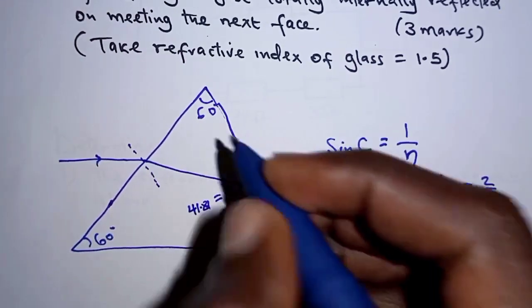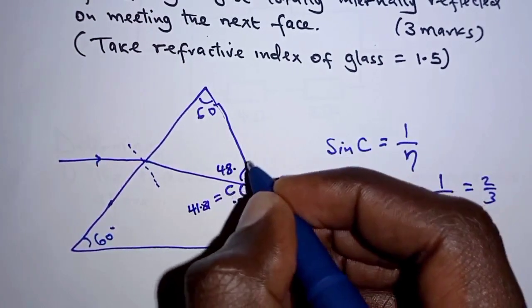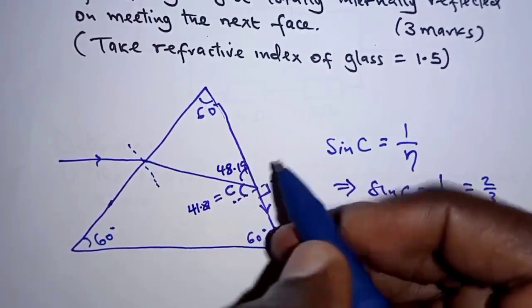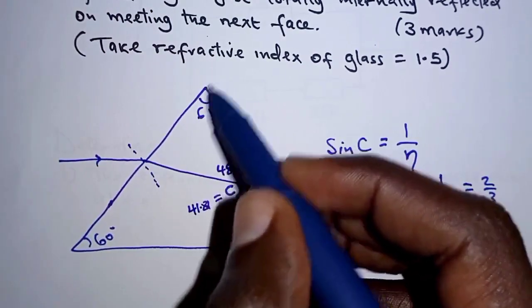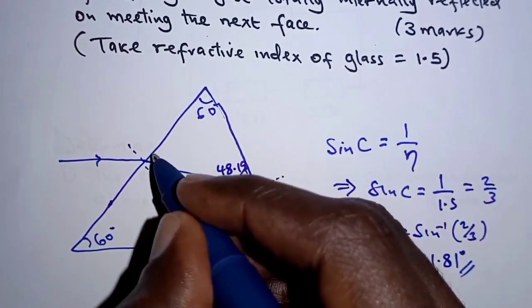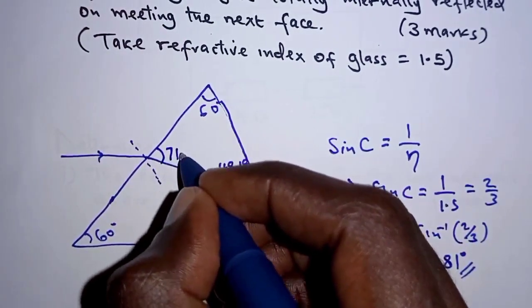And if here is 48.19 and we have 60 here, angle property of a triangle, this side will therefore have 71.81. Angles of a triangle add up to 180, so we remain with 71.81 for this angle.